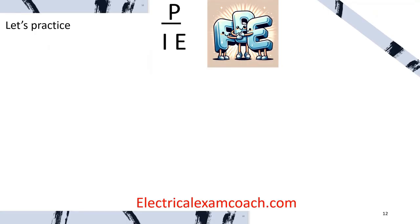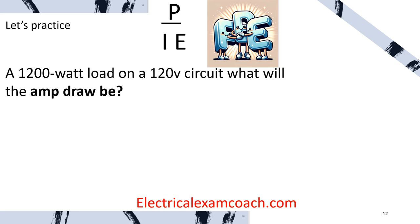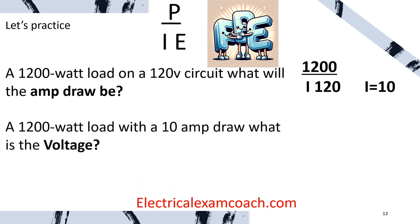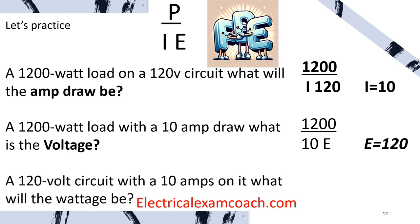In our first scenario, we have a 1200 watt load on a 120 volt circuit — what will the amp draw be? We plug in what we know: wattage and voltage, solving for current. We divide and end up with 10 amps. Next, a 1200 watt load with a 10 amp draw — what is the voltage? We divide 1200 by 10 and get 120 volts. And if we have a 120 volt circuit with 10 amps, what is the wattage? We multiply 10 by 120 and get 1200 watts.